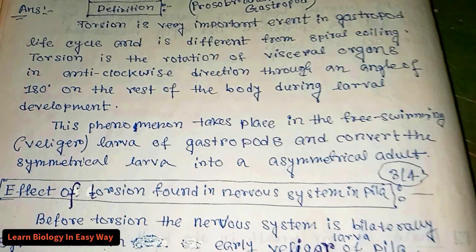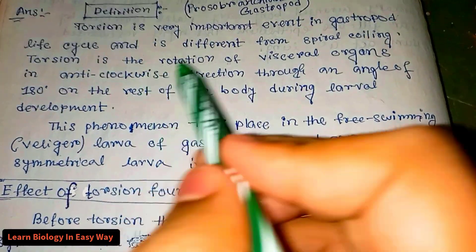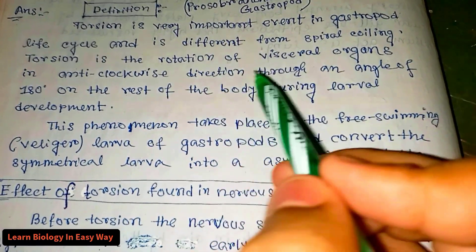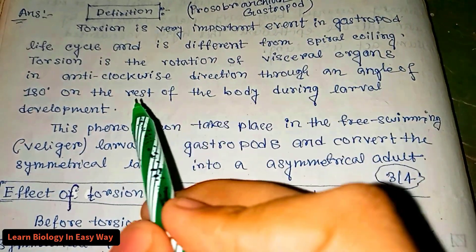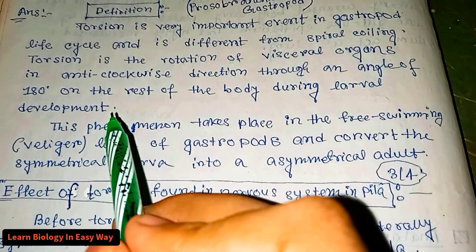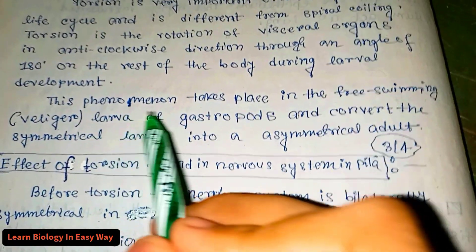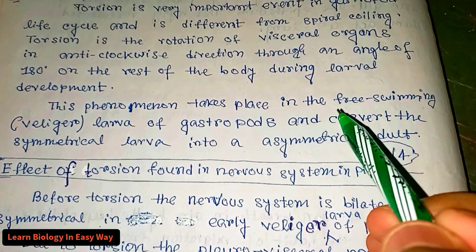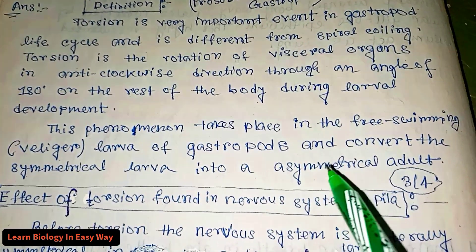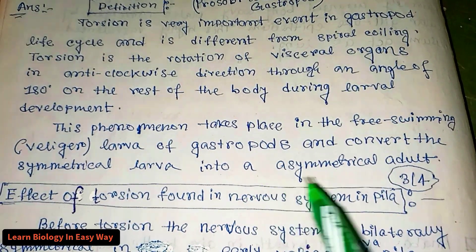What is torsion? Torsion is a very important event in gastropod life cycle and is different from spiral coiling. Torsion is the rotation of visceral organs in an anti-clockwise direction through an angle of 180 degrees on the rest of the body during larval development. This phenomenon takes place in the free-swimming veliger larva of gastropods and converts the symmetrical larva into an asymmetrical adult.